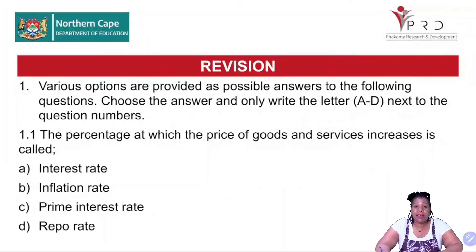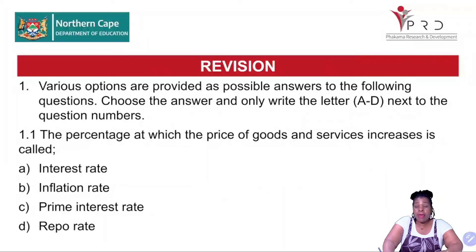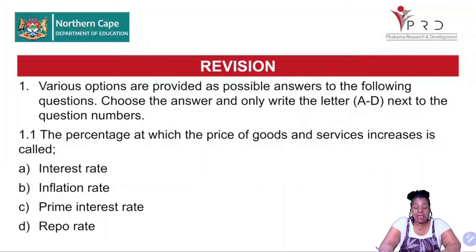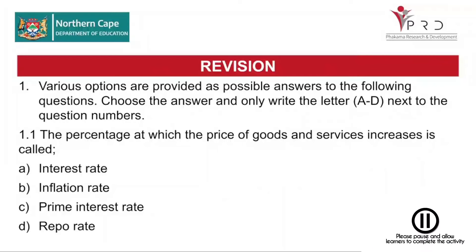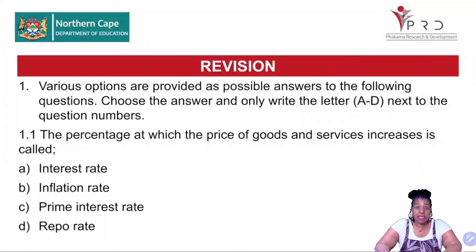Question 1.1: a percentage at which the price of goods and services increases is called — A, interest rate; B, inflation rate; C, prime interest rate; and D, the repo rate. Answer 1.1, and then we can proceed to question 1.2.